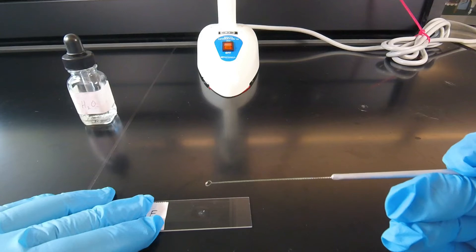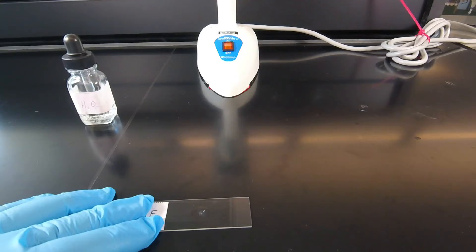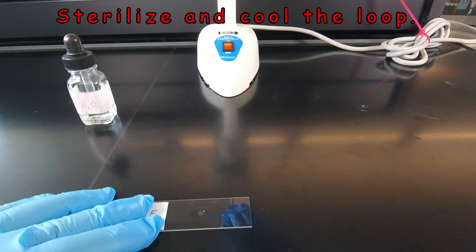We don't want to put all of this bacteria on because that defeats the purpose of the water. The smear will be too thick to stain properly. So what we're going to do is burn the remaining bacteria off the inoculating loop.